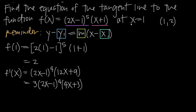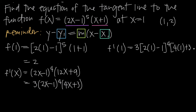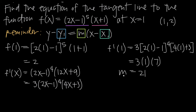Now we evaluate the derivative at x equals 1. So f prime of 1 equals 3 times 2 times 1 minus 1, raised to the fourth power, times 4 times 1 plus 3. We get 3 times 1 to the fourth, which is 1, times 4 plus 3, which is 7. So 3 times 1 times 7 equals 21. This value, 21, is our slope m.